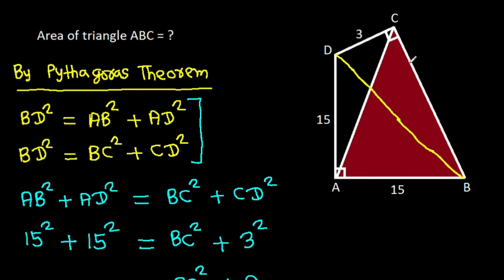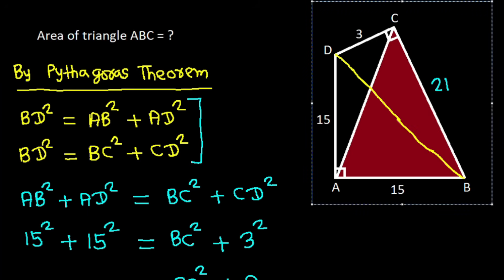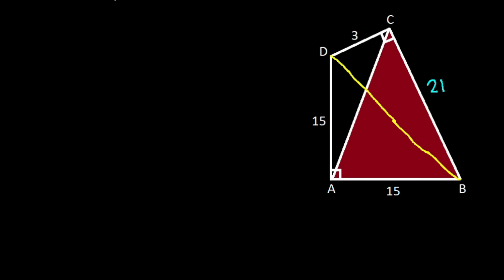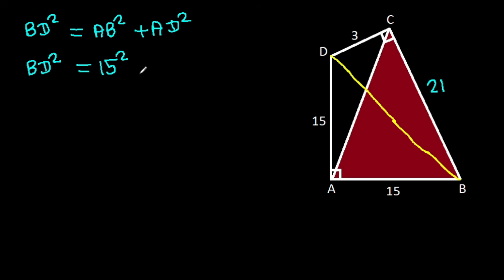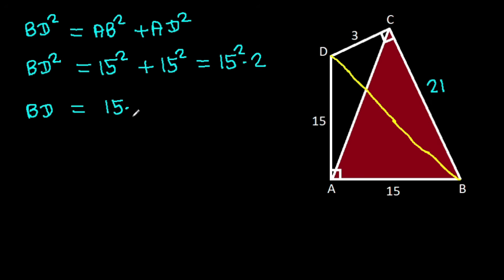BC is 21. Now, BD² = AB² + AD² = 15² + 15² = 450, so BD = 15√2.